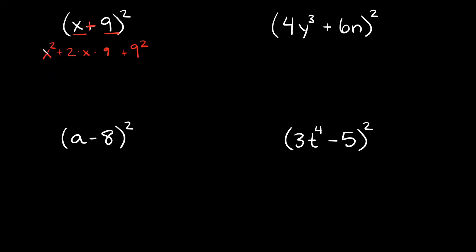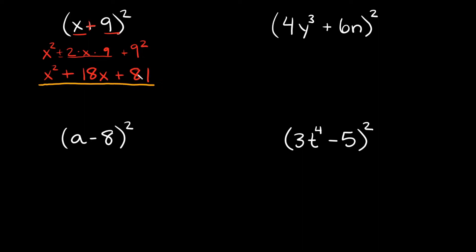So if we simplify this, we have x squared, and then the middle term — two times x times nine — well, two times nine is 18, so here this would be 18x. And we're adding, so plus 18x. Then at the end we have plus nine squared, and nine squared is just 81. So this is as simplified as I can write this — there's nothing left to combine. Your final answer right here would just be x squared plus 18x plus 81.